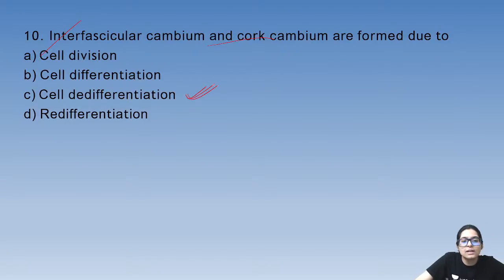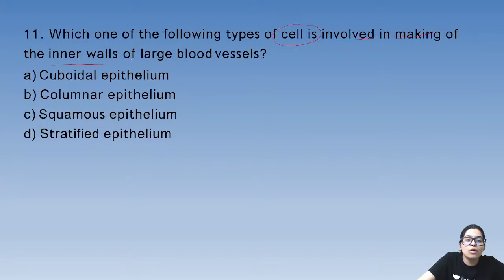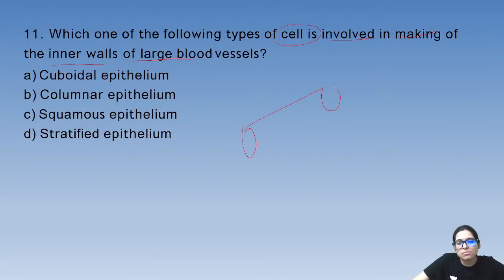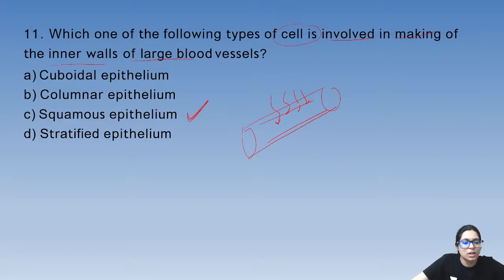Question 10: cell de-differentiation. Which type of cell is involved in making the inner wall of large blood vessels? It is made up of squamous epithelium, so that gaseous exchange can occur. The answer is C.